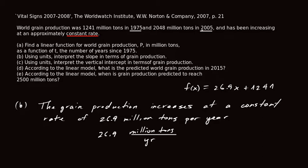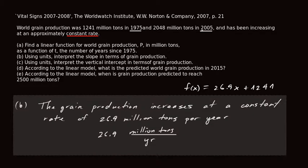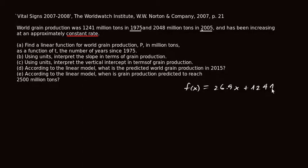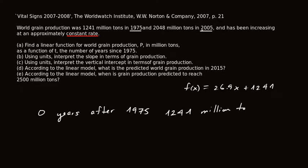Part C asks us to interpret the vertical intercept in terms of grain production. The vertical intercept is 1,241. It means that zero years after 1975 — which corresponds to the year 1975 itself — 1,241 million tons of grain were produced. The million tons is the important part when using units.